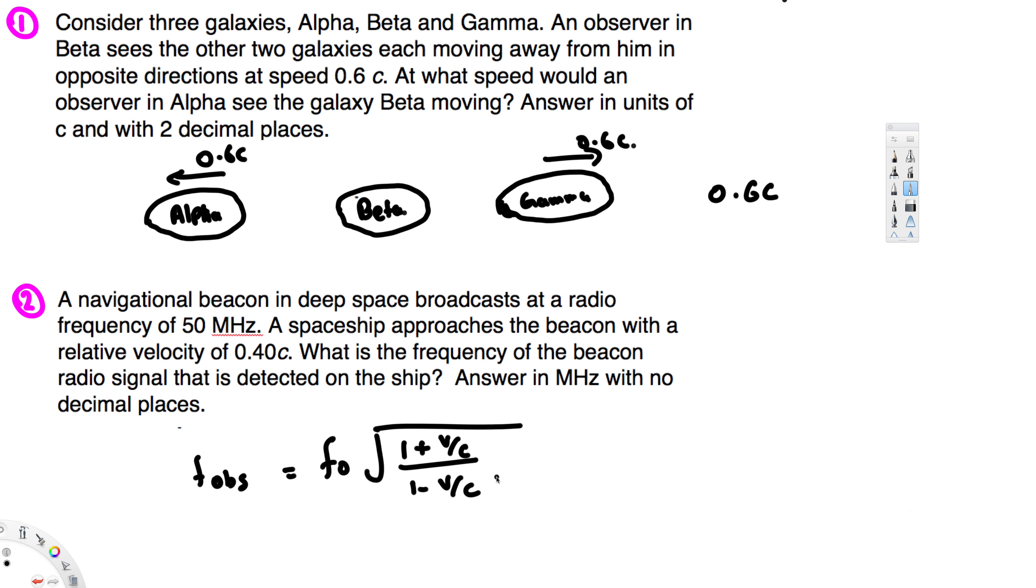And v is the speed of the space probe and c is the speed of light. Okay, now let's go ahead and plug the values in. Frequency is given, that is 50 megahertz, times the square root of (1 + v is 0.4c/c) over (1 - 0.4c/c). The c's cancel.